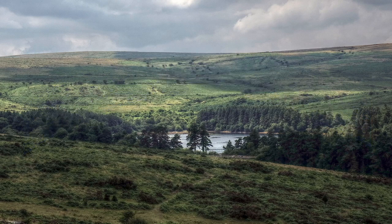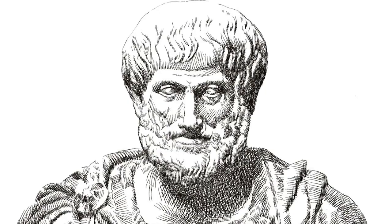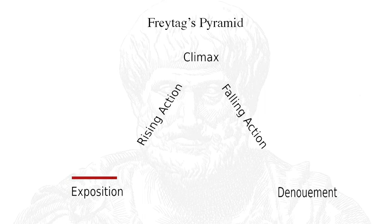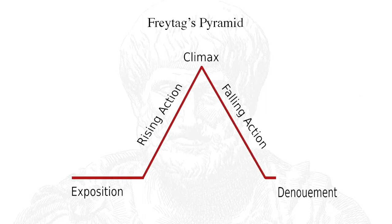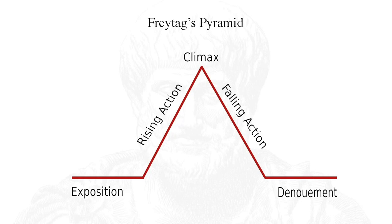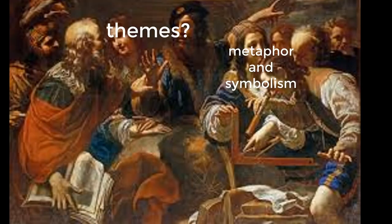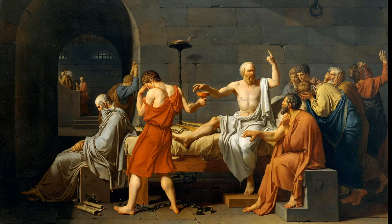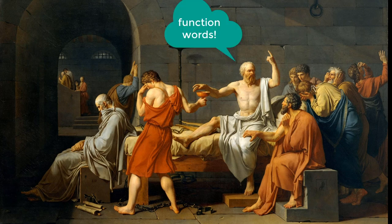Since Aristotle, scholars have argued that stories share a basic structure. Authors need to set the stage at the beginning, have some kind of climax in the middle, and then tie everything together at the end. The problem is, no one can agree on how to identify or measure these dimensions. We wondered if we could see this structure by looking at those small, hidden function words, instead of paying attention to the themes of stories.